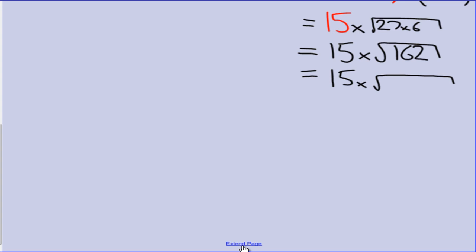For me, 162, I can see that it is double 81. And 81 is one of our perfect squares. So let's split that up again. 15 times the square root of 81 times the square root of 2. 15 still stays out the front. The square root of 81 is no longer a surd. That is now a whole number.